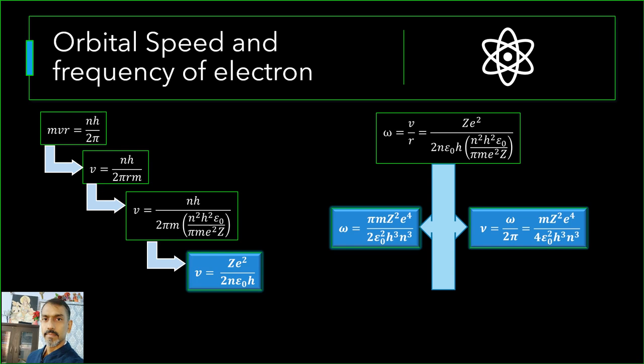Clearly, frequency is inversely proportional to cube of quantum number n. Time period is reciprocal of frequency, therefore time period is directly proportional to cube of quantum number n.